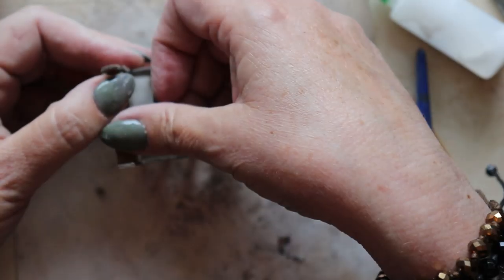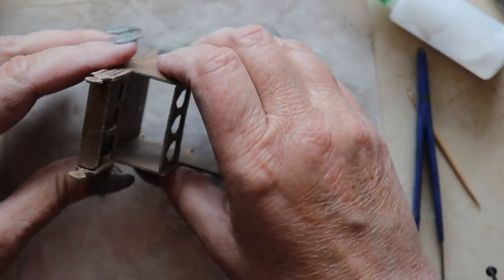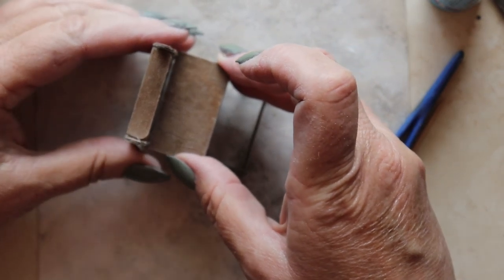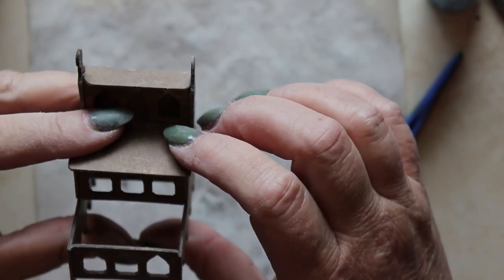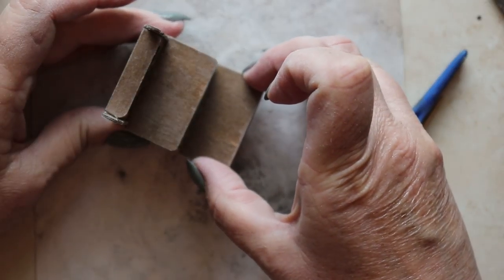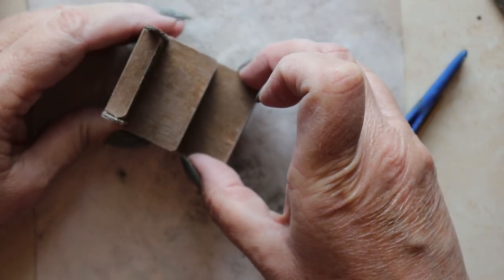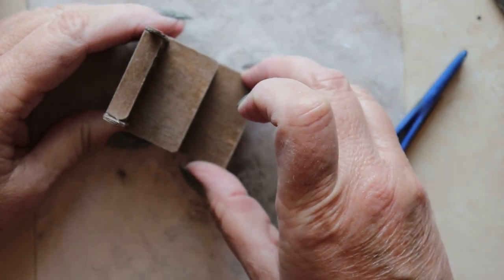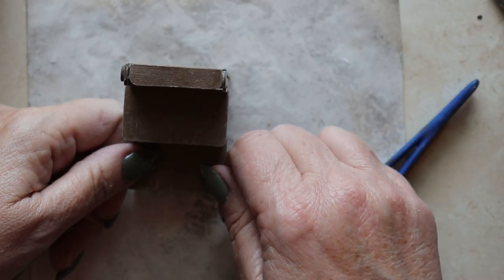Now it's time to install the treads. They overhang the exterior edge by a small margin, so do your best to center them on the main structure so that the same amount of material overhangs on either side.